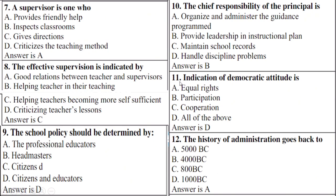Question 11: An indication of a democratic attitude is — right option is D: all of the above, meaning A: equal rights, B: participation, C: cooperation.